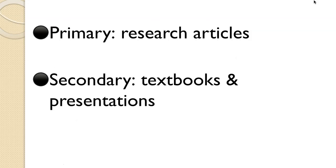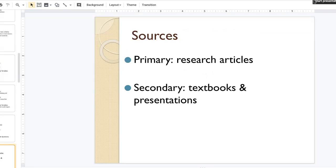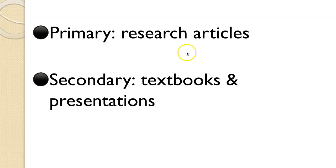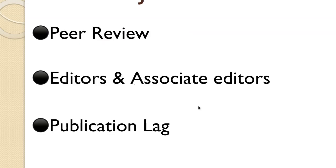Now let's talk briefly about sources. Primary sources are research articles — typically published in peer-reviewed journals — that present new data and new information. Everything else is secondary: textbooks, presentations, summaries of existing knowledge. A secondary source is anything that's not that original primary research article presenting new findings.